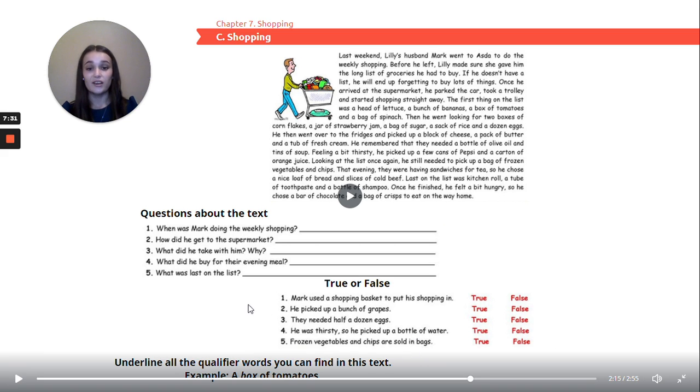And then the last exercise will be underline all the qualifier words you can find in this text. For example, a box of tomatoes. There are quite a few in this exercise. Let's continue.